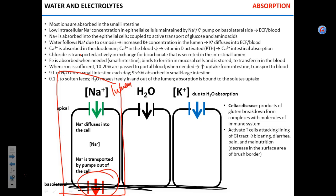The sodium-potassium pump pumps sodium out of the epithelial cell into the blood — or more precisely, into the extracellular fluid first, and then into the blood. So sodium is pumped out of the epithelial cell, meaning the concentration of sodium inside the epithelial cell is low.